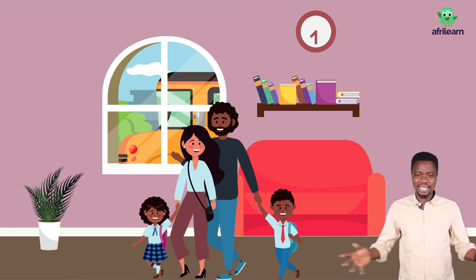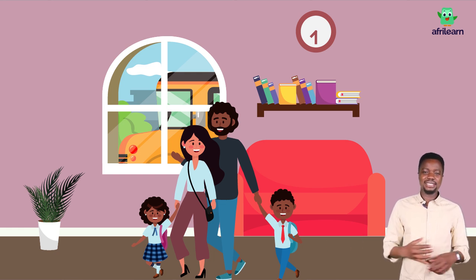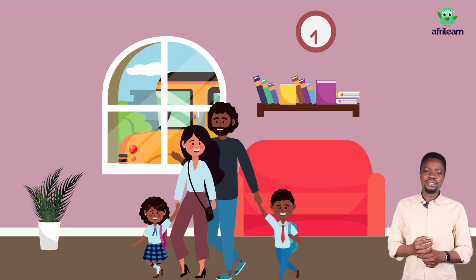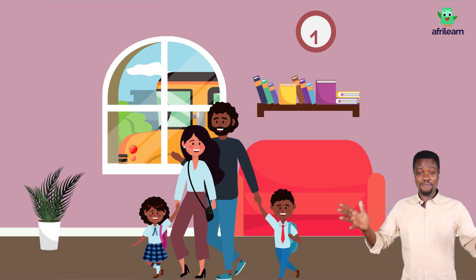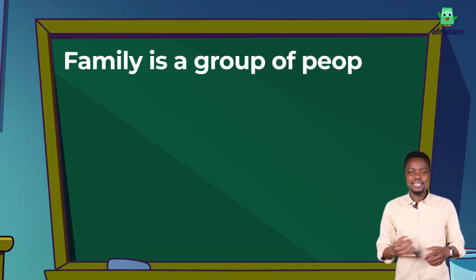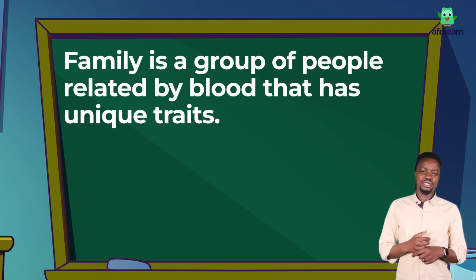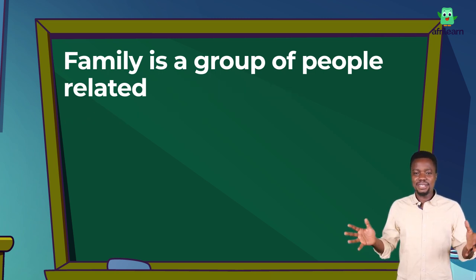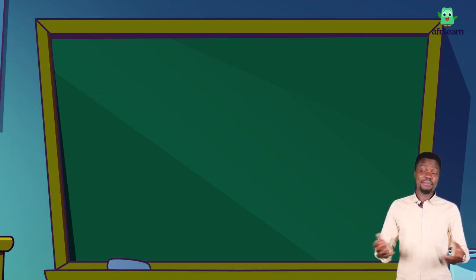A brilliant child might be brilliant because one or both parents are. There are many characteristics that you can trace to someone in your family. In summary, a family is a group of people related by blood that has unique traits. These family traits are important and they help you to identify members of your family easily.